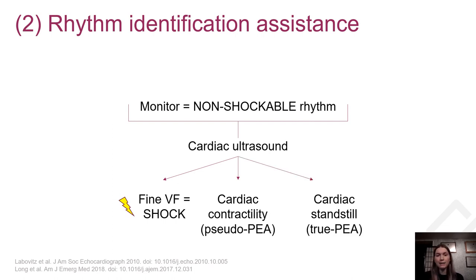Patients presenting with pseudo-PEA often have a reversible cause of arrest that can be treated if identified promptly. With true PEA or asystole, echocardiography shows cardiac standstill, a consequence of electromechanical dissociation when cardiac electrical impulses are unable to generate ventricular contraction. The differentiation between pseudo- and true-PEA could potentially help prognostication, although data is still insufficient to change ACLS management. AHA 2020 guidelines recommend against using POCUS to decide whether resuscitative maneuvers should be stopped based on the absence of cardiac activity on ultrasound.